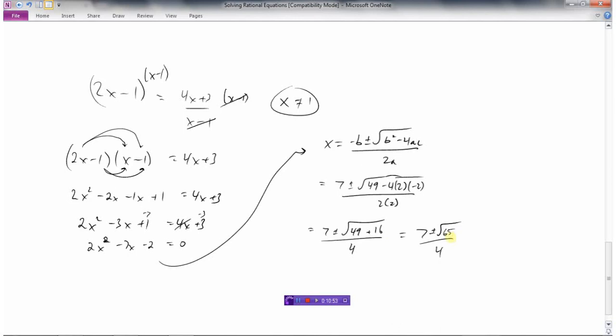49 plus 16 is 65 divided by 4. The square root of 65 doesn't simplify or come out to be a rational number. Certainly if you go 7 plus root 65 divided by 4 or 7 minus root 65 divided by 4, you're not going to get 1. So our two answers would be x equals 7 plus or minus the square root of 65 divided by 4.